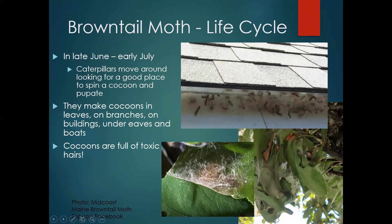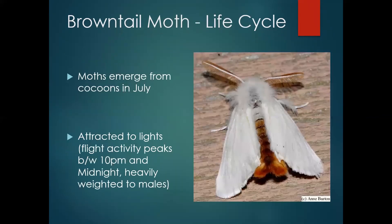These are sort of messy cocoons, and there can be multiple individuals inside each. One thing of note — the silk that comprises those cocoons is impregnated with toxic hairs from that last caterpillar skin. It's sort of a defense against predators at a very vulnerable time in their lives. Then a couple of weeks later after pupation, the adult moths come out. This is why they're called browntail moth — because they have this brown abdomen. The adults don't have those toxic hairs that the caterpillars have.